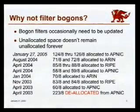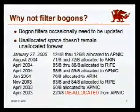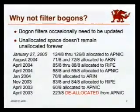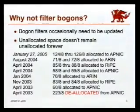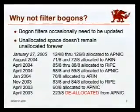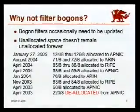Also note that back in April 2003, APNIC returned 223 to IANA. So the updates aren't always just removing things from your Bogon filters — sometimes you have to put things back in.